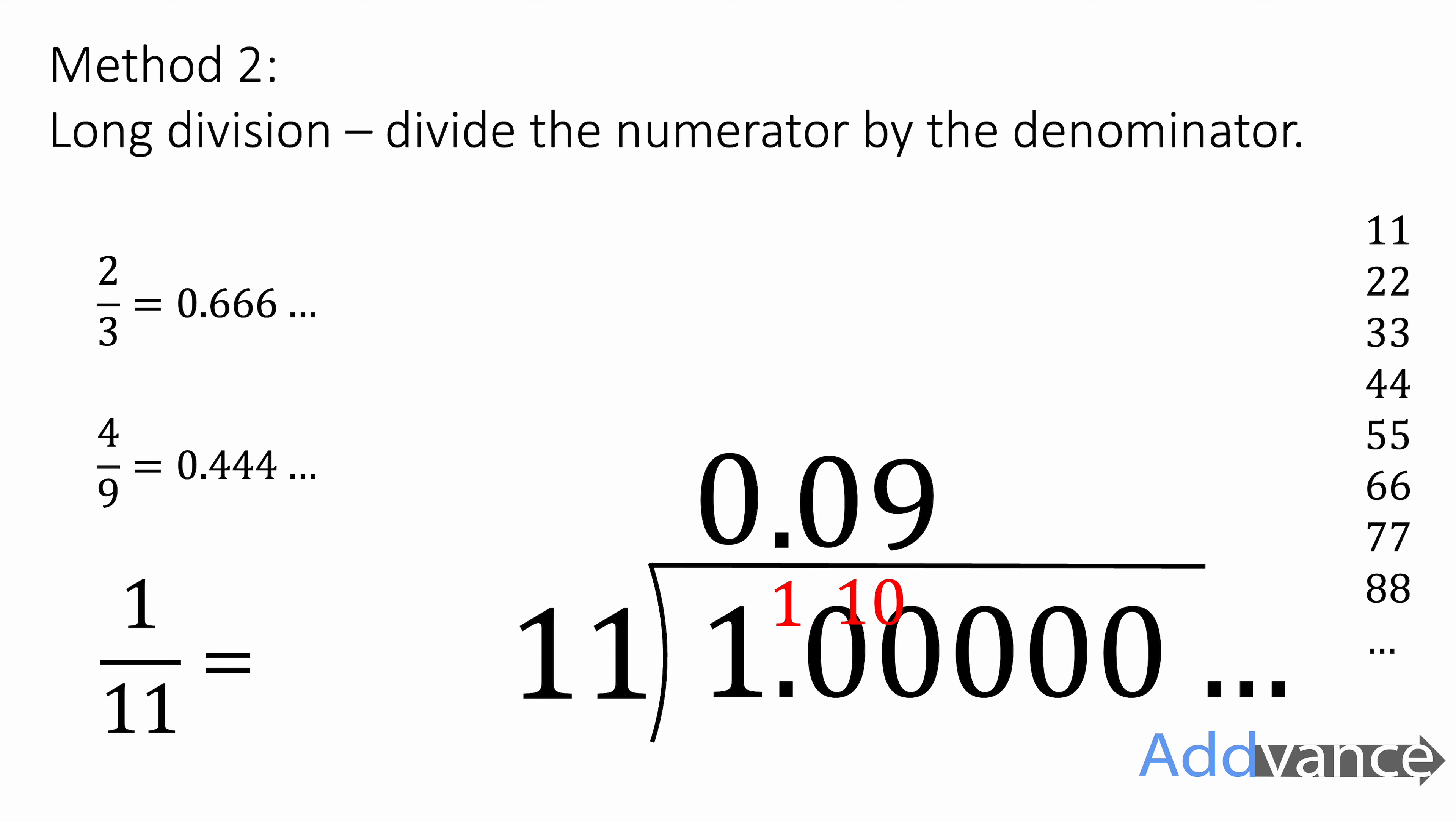How many elevenths go into 100? Well, that's 9 to make 99. And then there's 1 left over. How many elevenths in 10? 0. How many elevenths in 100? There are 9. And the pattern continues. 0.0909, and it continues like that forever, 090909.